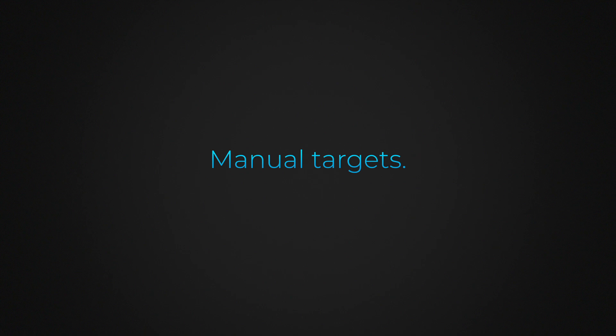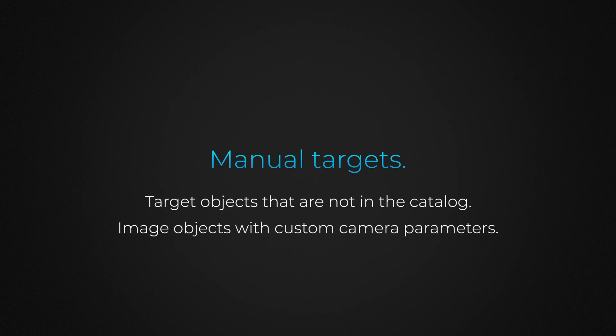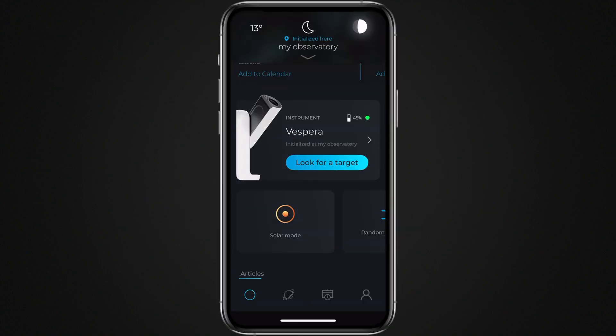Singularity allows you to define your own targets, either to observe an object not presented in the Explorer — such as a comet — or to observe an object with customized imaging parameters. Creating a manual target does not require your telescope to be turned on.